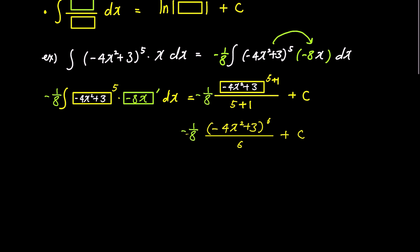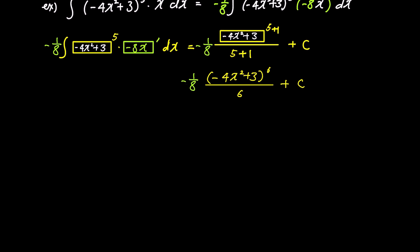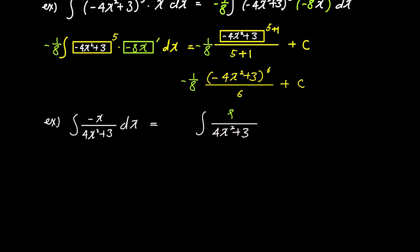To explain the third property, let's look at a simple fraction integral: the integral of -x over (4x² + 3). If the numerator is in the form of the derivative of the denominator, quick integration is possible. The derivative of the denominator (4x² + 3) is 8x, and we need this 8x in the numerator.